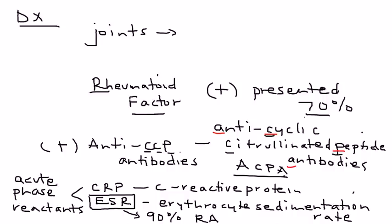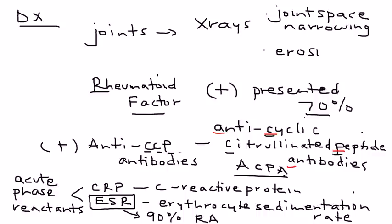And then finally, the x-rays that you do to look at the joints will show some very characteristic findings, such as joint space narrowing, which is very characteristic. The space in between the joints is smaller than it should be. And then the erosions of bone, that's also very characteristic that you can see on x-rays.